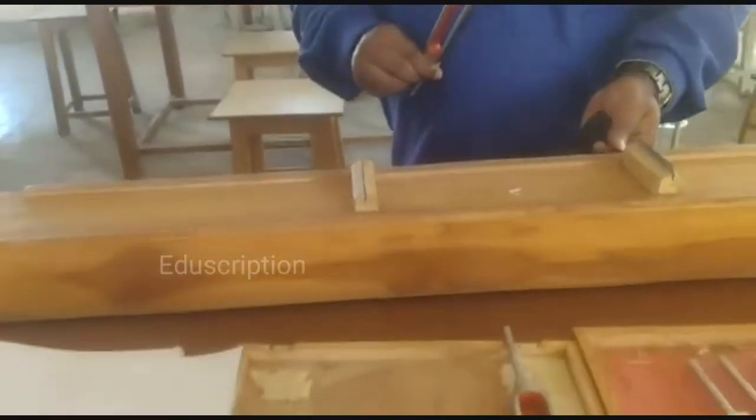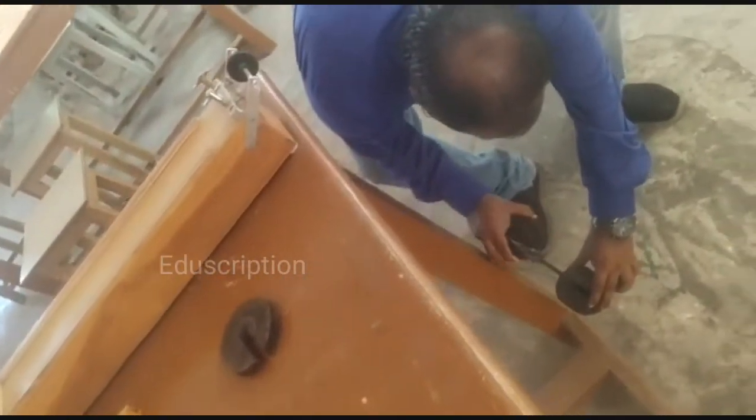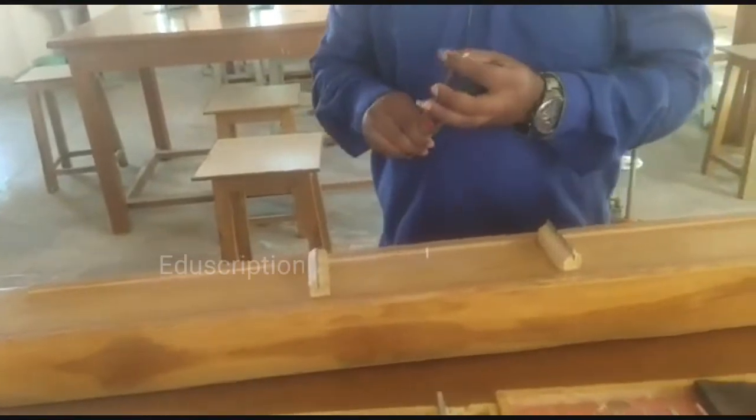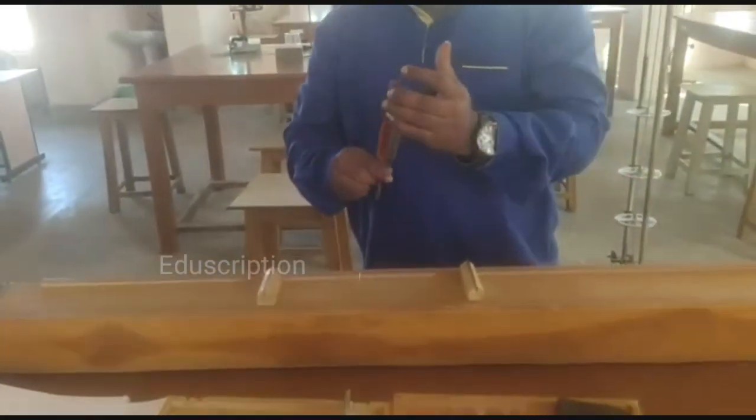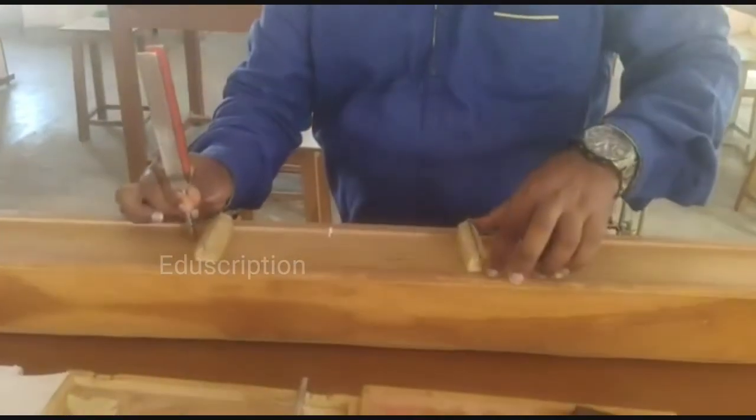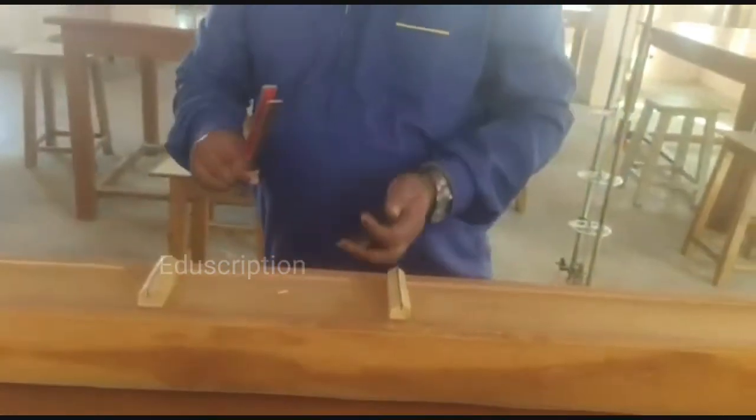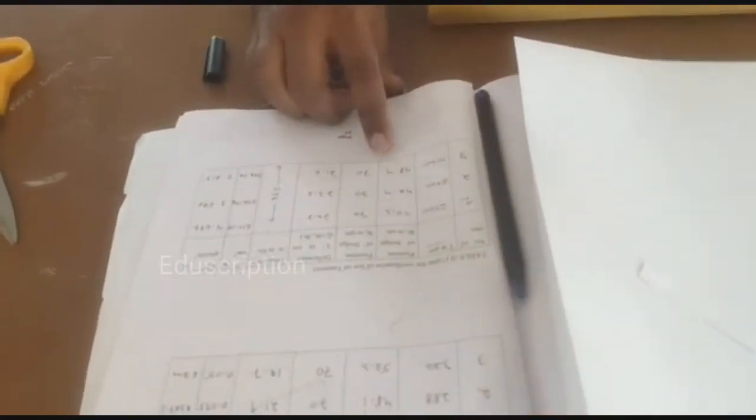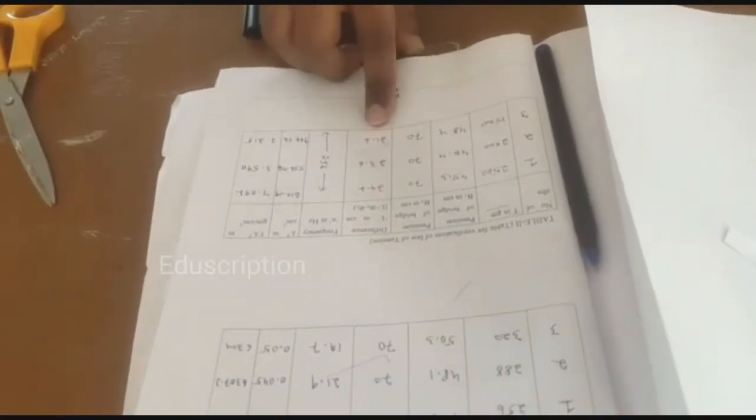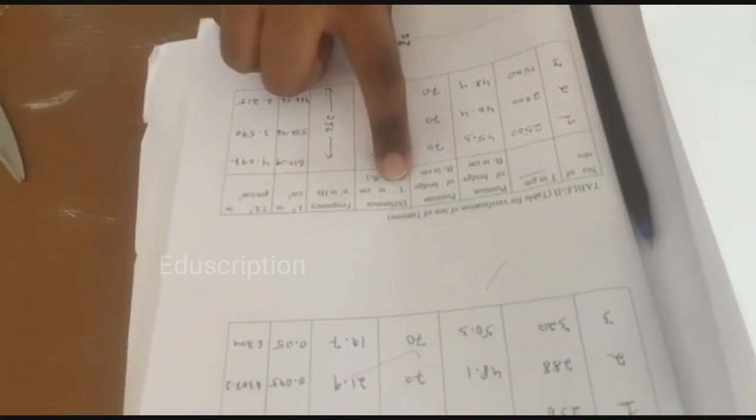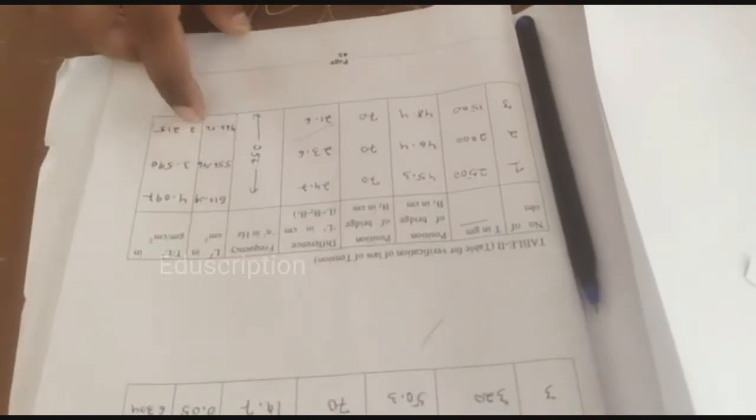Then position of B1 is 46.4. Then another 500 gram load removed, B1 is 38.4. Now load is 1500 gram. Use 256 Hz then find position for B1 is how much. Then position for B1 is 48.4. Then we have to find difference, then difference is your L, then we have to find L square, then we have to find T by L square. And these are the readings.